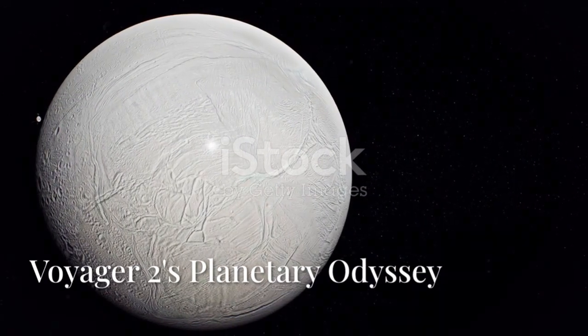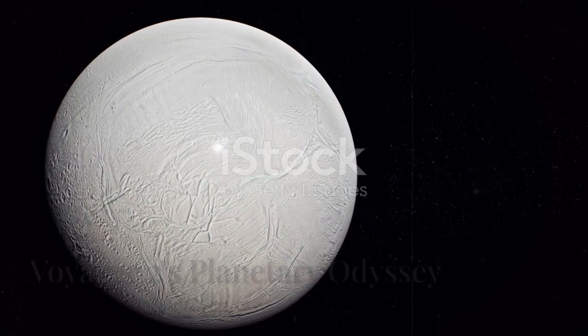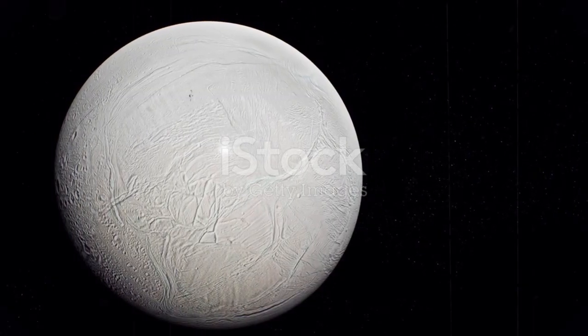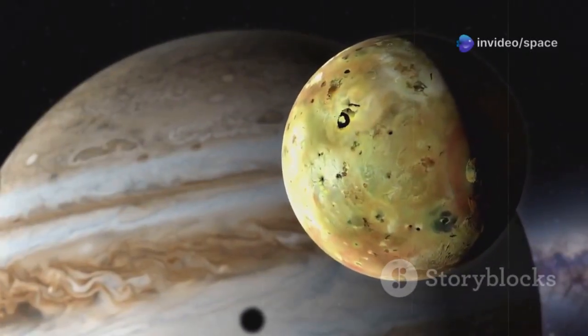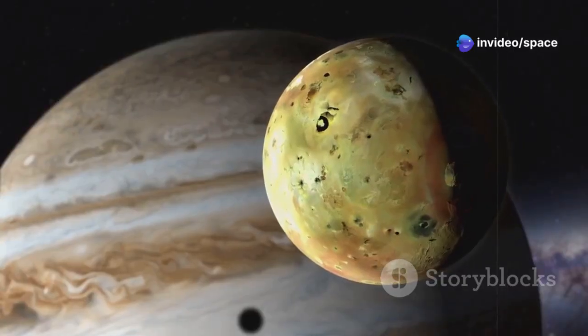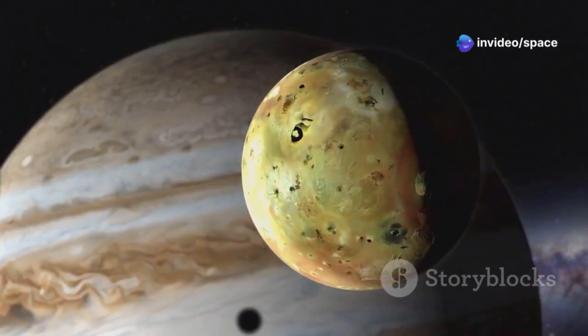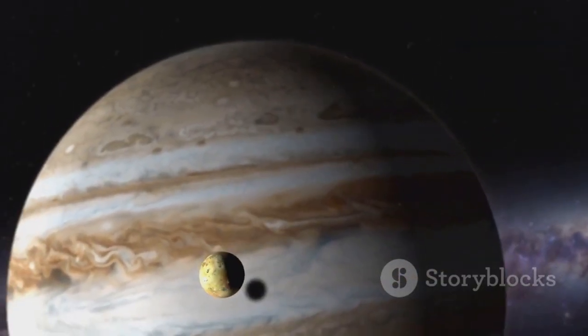Before it became an interstellar explorer, Voyager 2 was a planetary tourist on an epic road trip. It began with Jupiter in 1979, revealing turbulent storms, new moons, and active volcanoes on Io, the first seen beyond Earth.